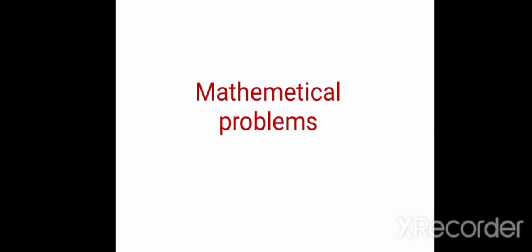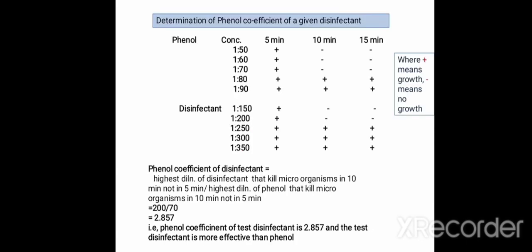Now we will move to the mathematical problems — the determination of phenol coefficient of a given disinfectant. It is found that at concentrations 1:50, 1:60, and 1:70, phenol kills microorganisms in 10 minutes and 15 minutes but not in 5 minutes. Whereas at 1:80 and 1:90 dilutions, phenol does not kill microorganisms in 5, 10, or even 15 minutes.